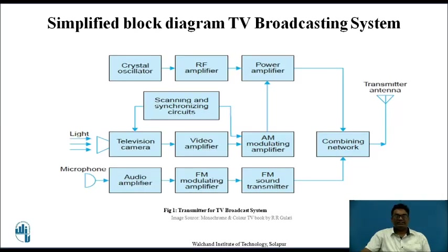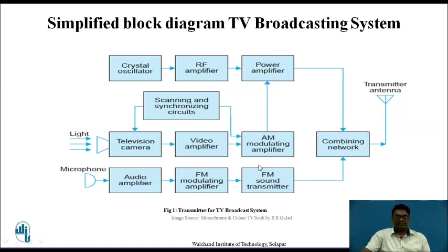This is the simplified block diagram for TV broadcasting system, and generally this is the transmitting side. Here there are different blocks: a television camera, video amplifier, AM modulating amplifier, audio amplifier, FM modulating amplifier, FM sound transmitter, crystal oscillator, RF amplifier and power amplifier, which then give output to the combining network. The combining network receives inputs from video and audio, and then gives output to the transmitting antenna.